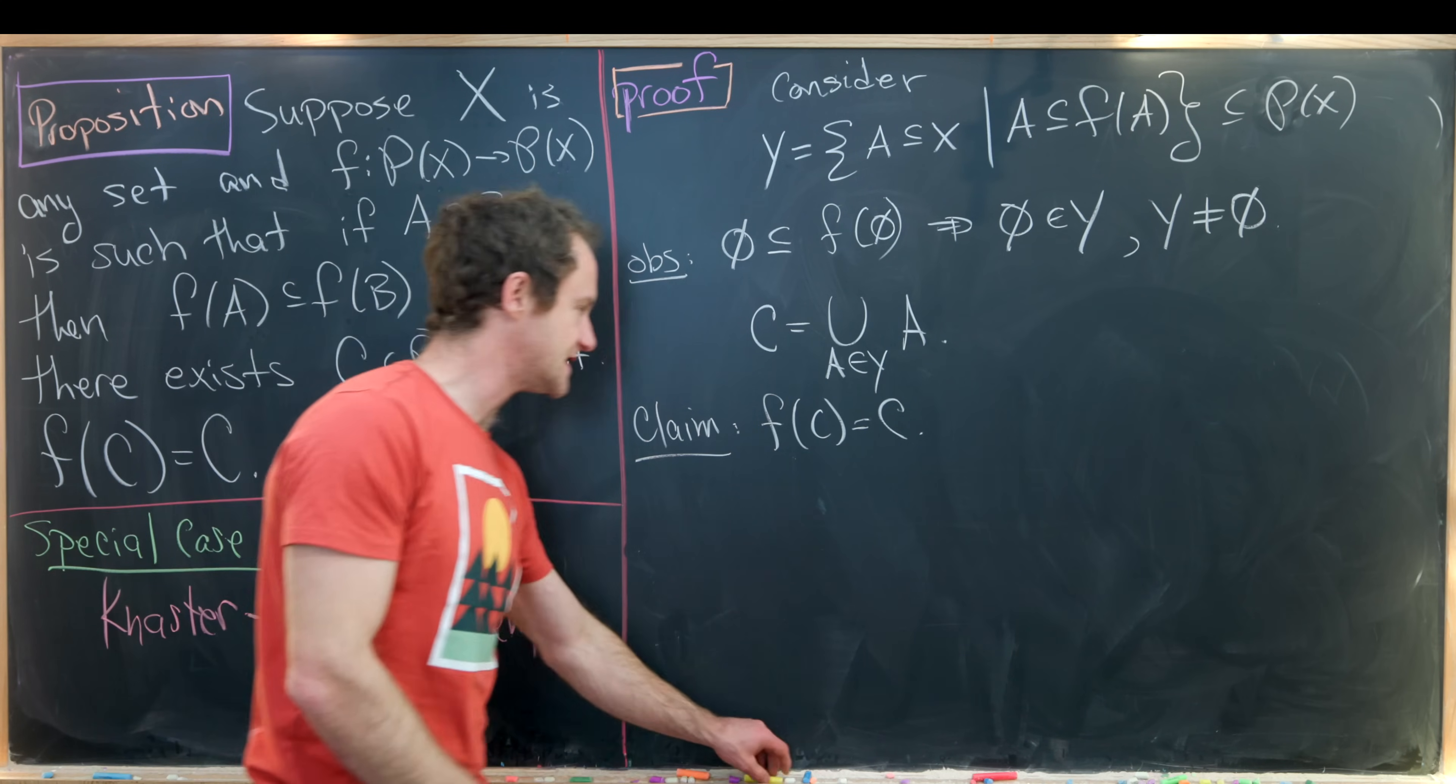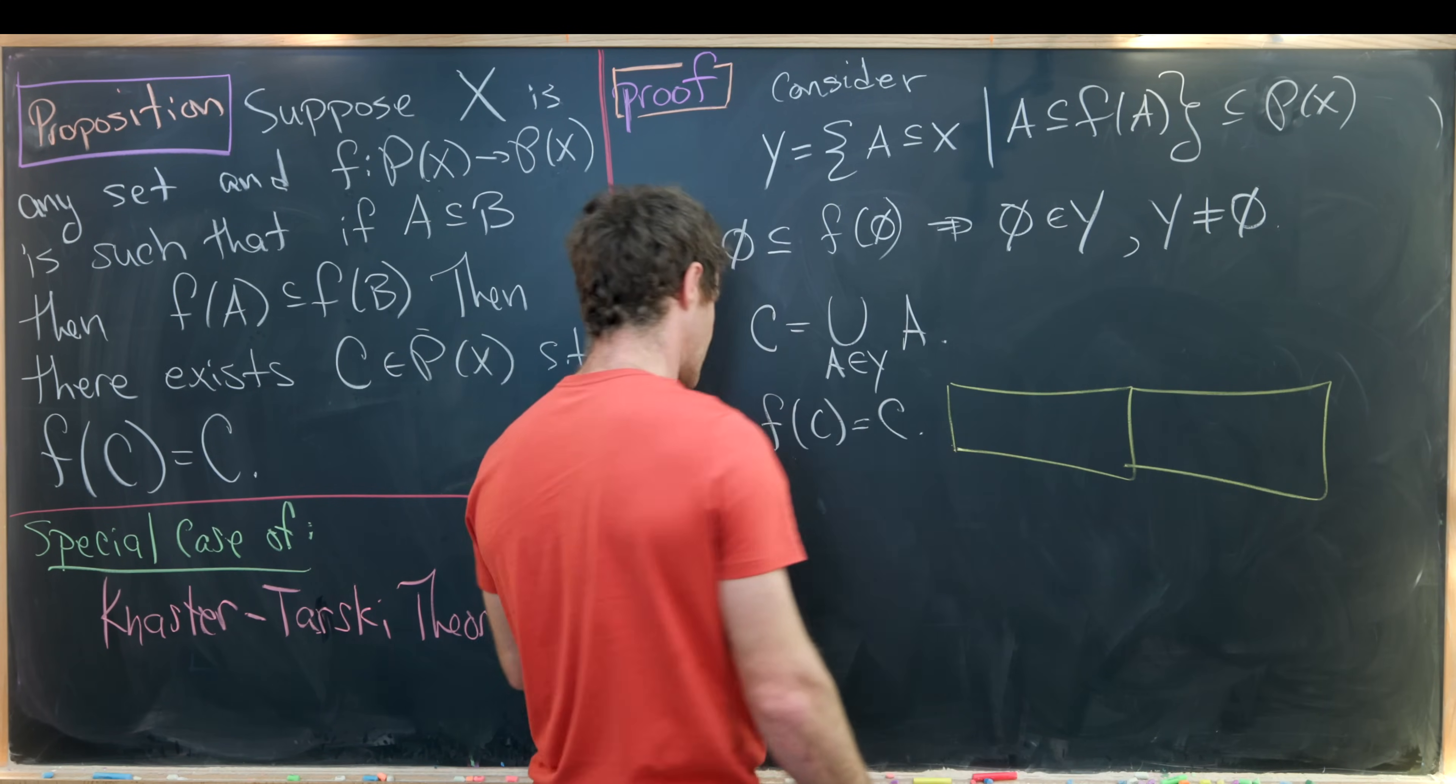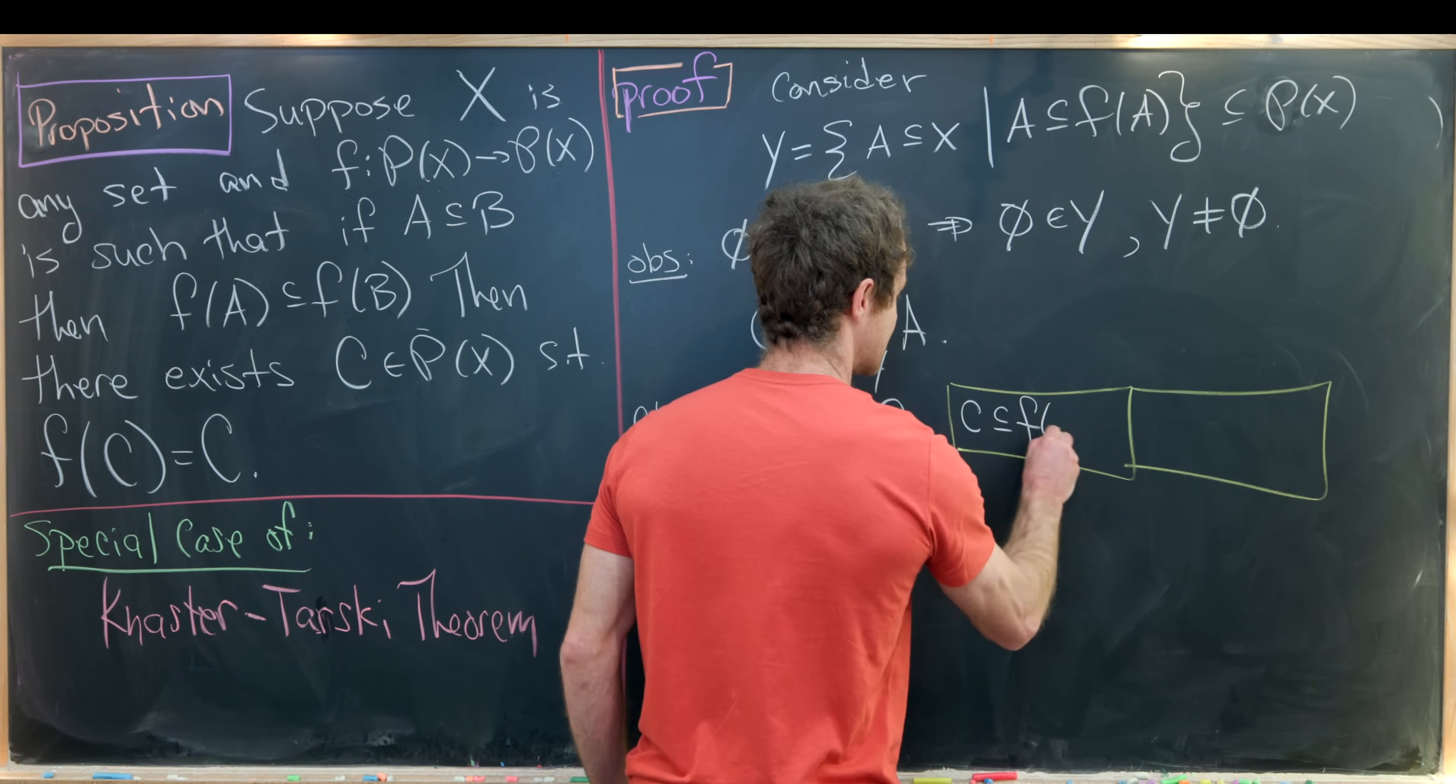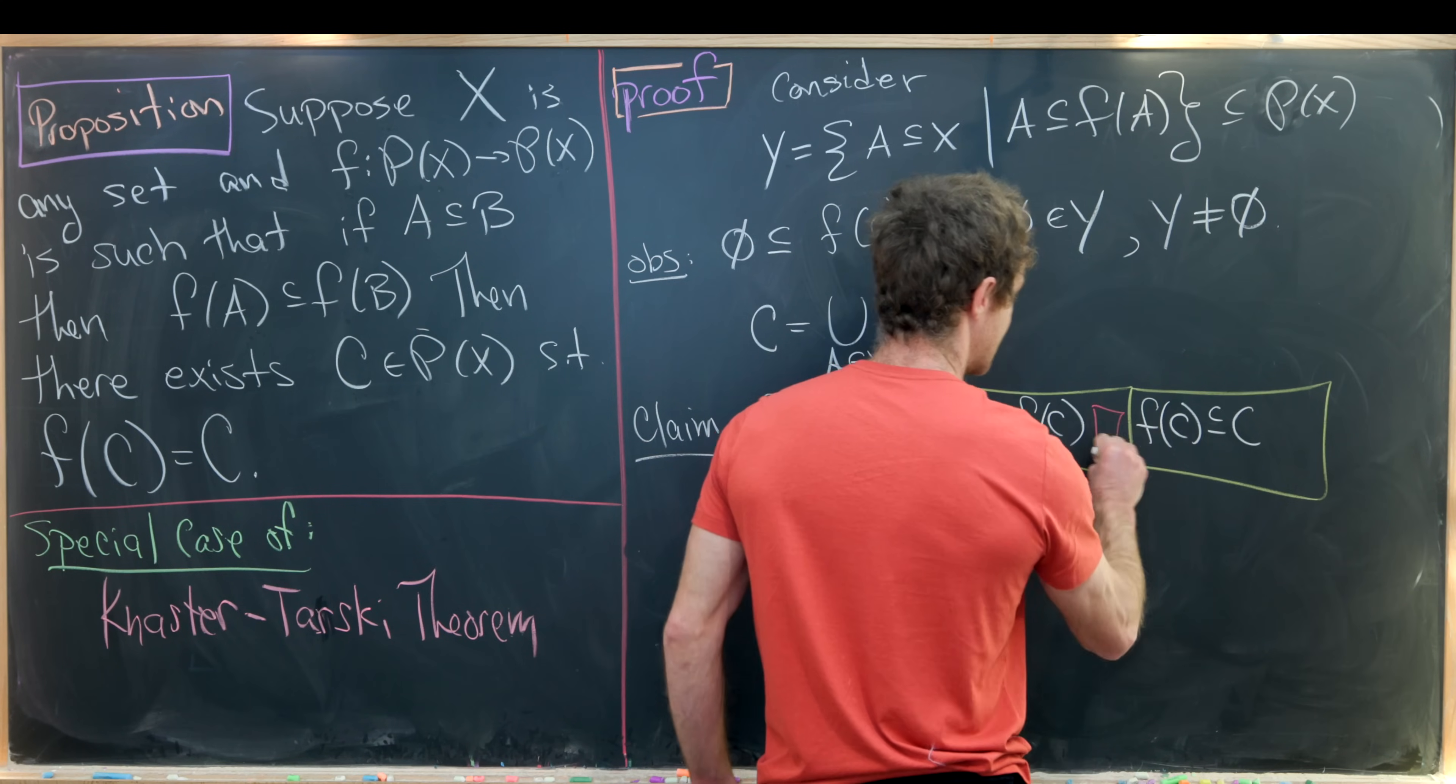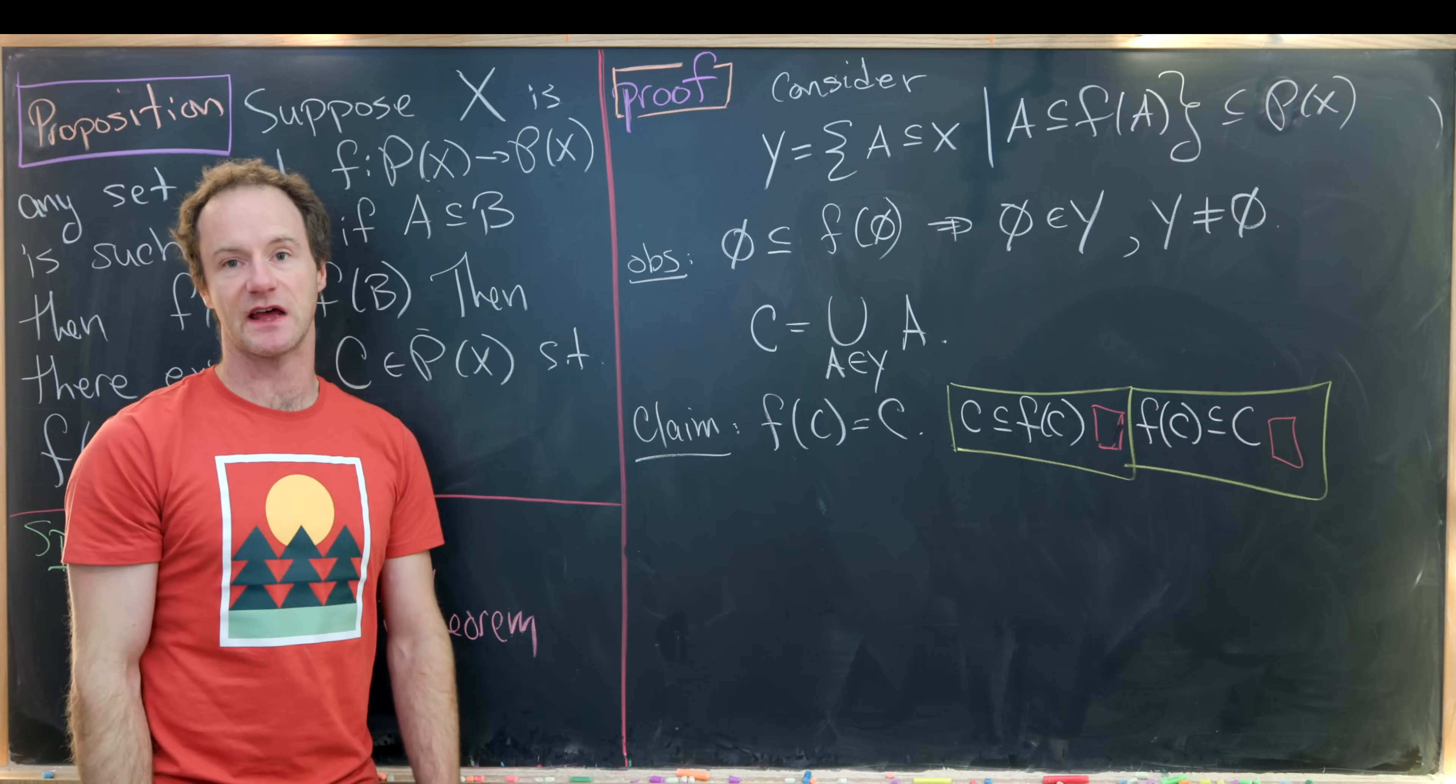Okay so we need to show two things in order to do this, and that's because we need double containment in order to prove that two sets are the same. So we first need to show that c is a subset of f of c. And then second we need to show that f of c is a subset of c. So let's see if we can do both of those. And we'll start with this first one, that c is a subset of f of c.